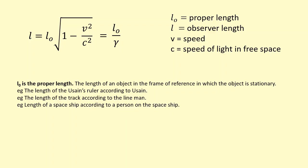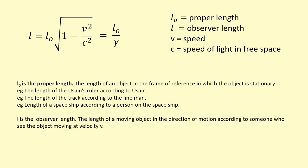Then you have the observer length. The observer length is the length of an object in the direction of motion according to someone who sees the object moving at velocity v. For example, the length of Usain's ruler according to the lineman who sees that ruler moving past him at velocity v.